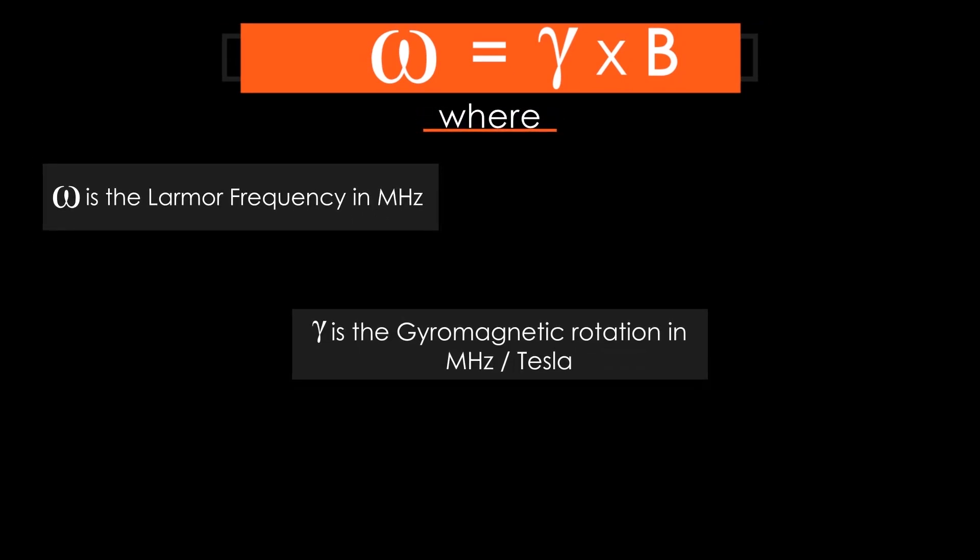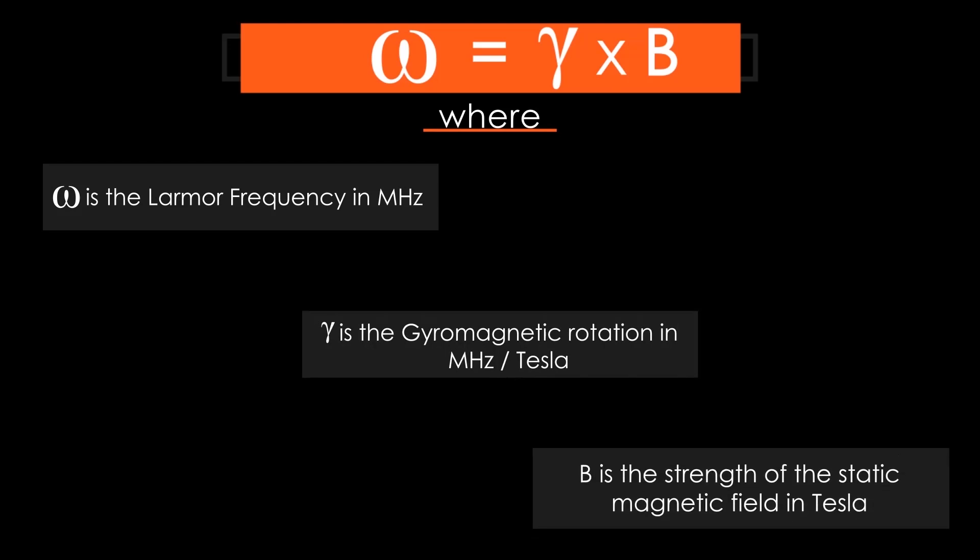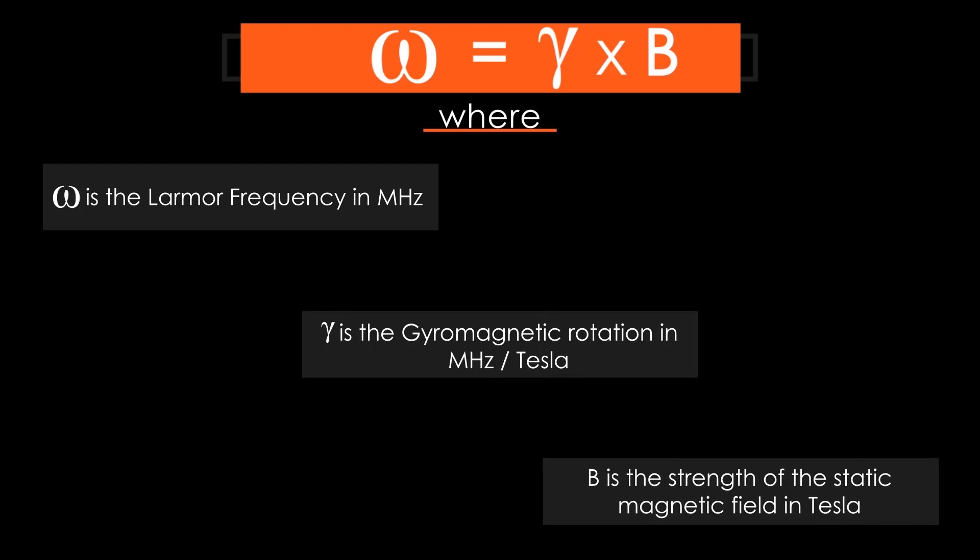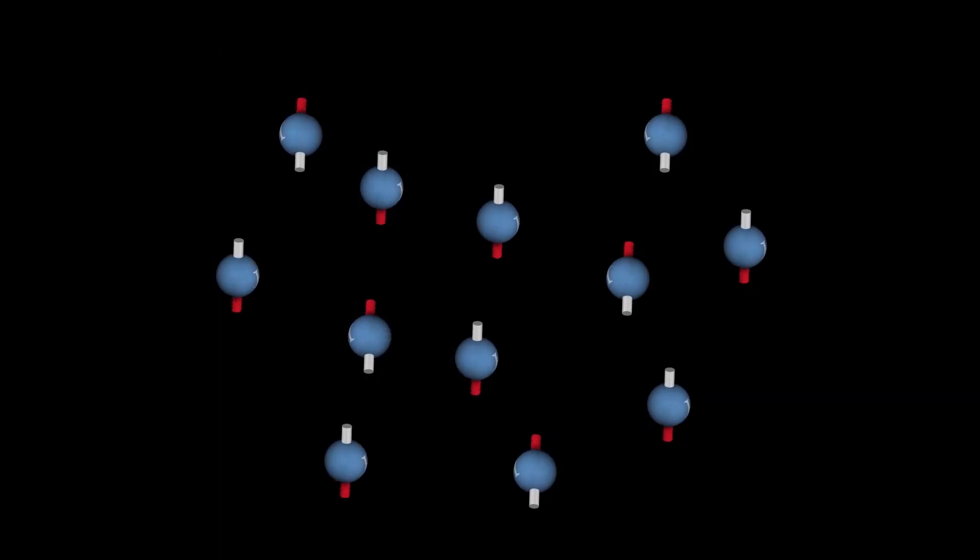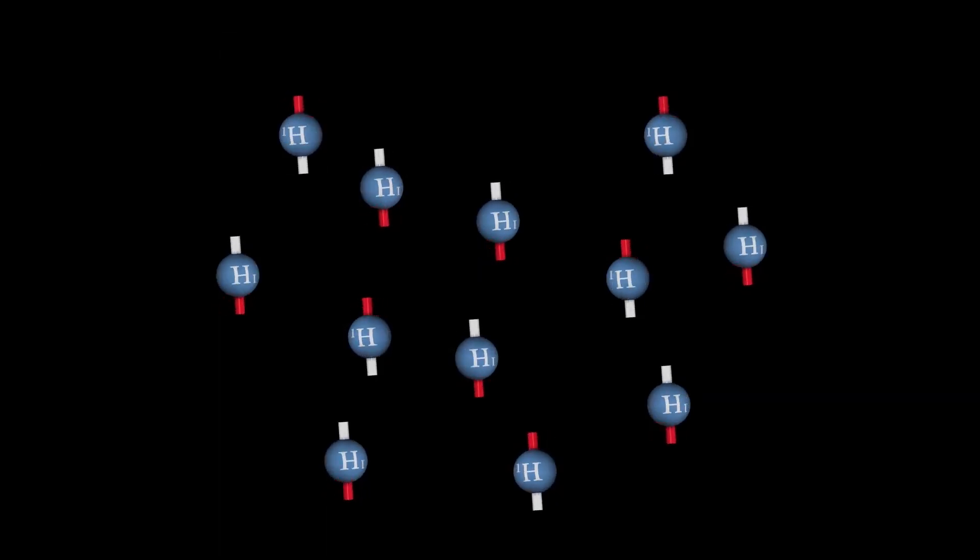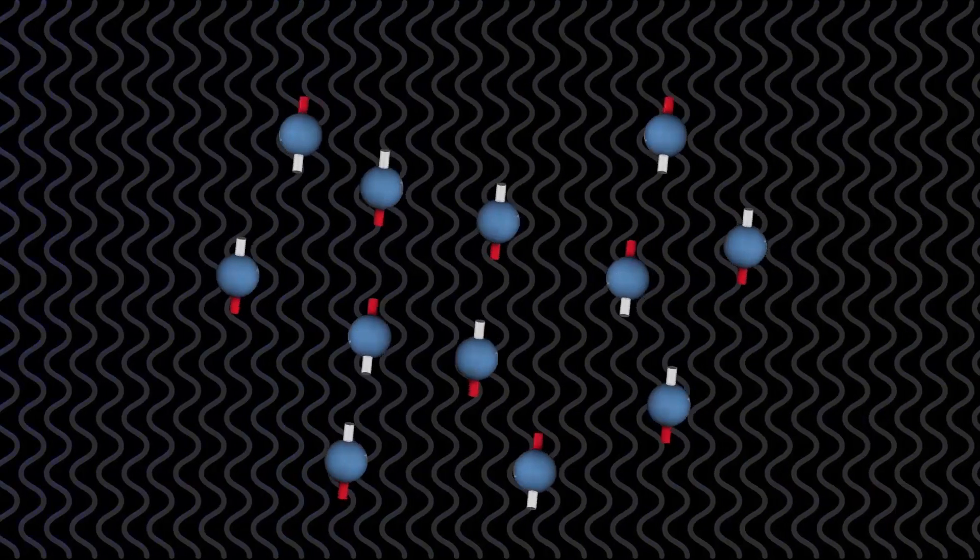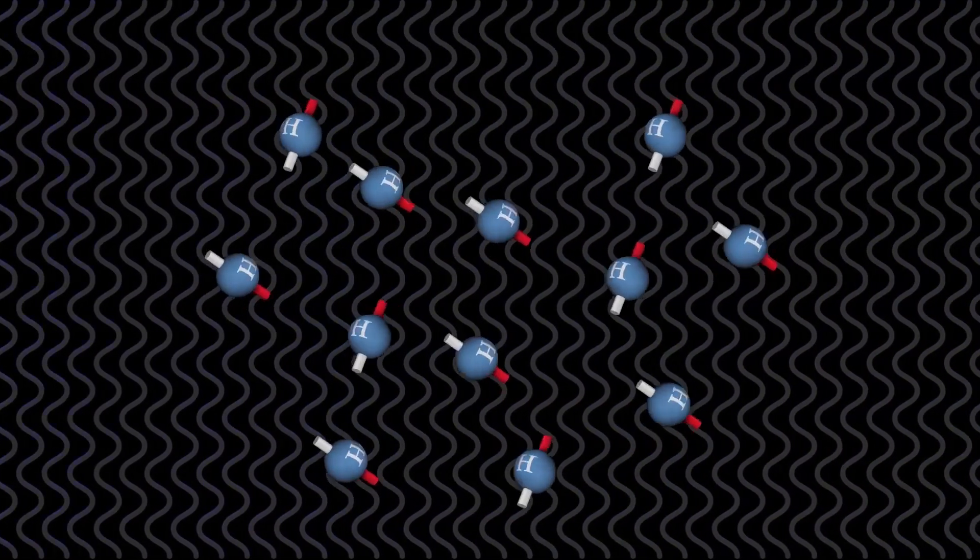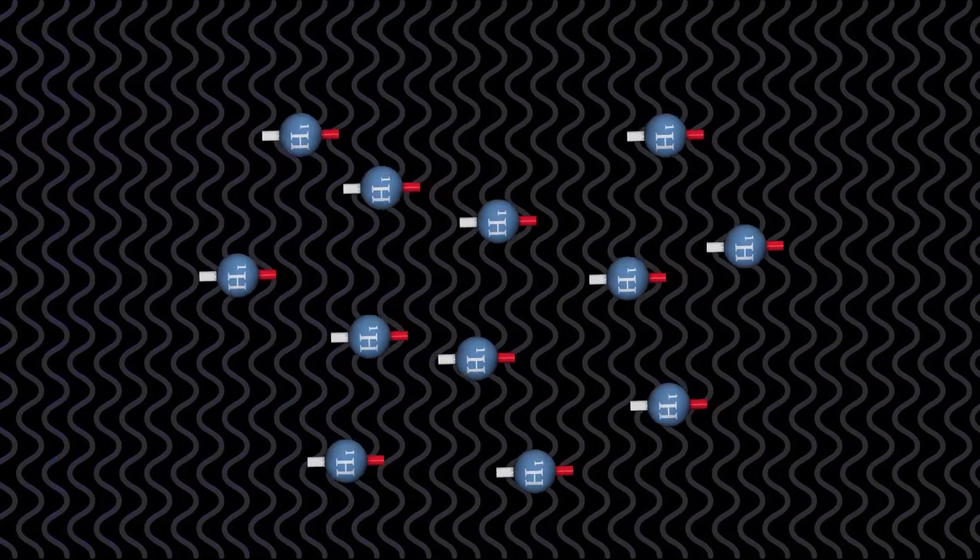The precessional frequency depends on the strength of the magnetic field and is calculated from the Larmor equation. When a radio frequency pulse with the same frequency as the proton's precessional frequency is turned on, the up protons flip away from the B0 field as they absorb the RF energy.